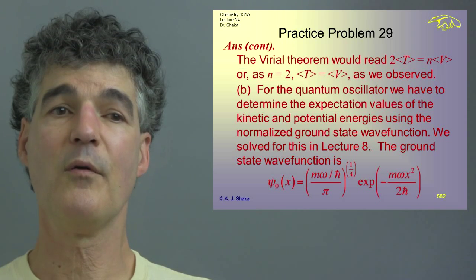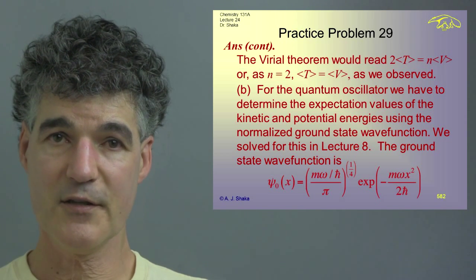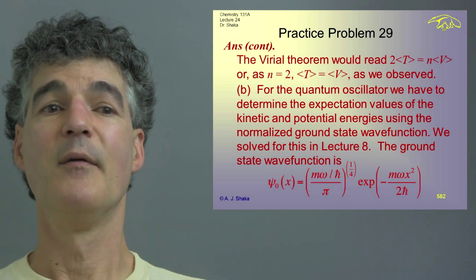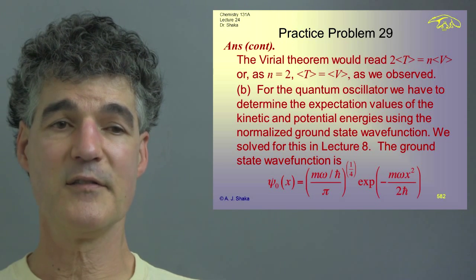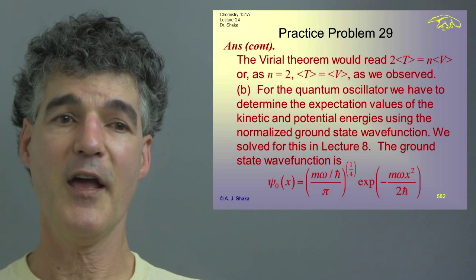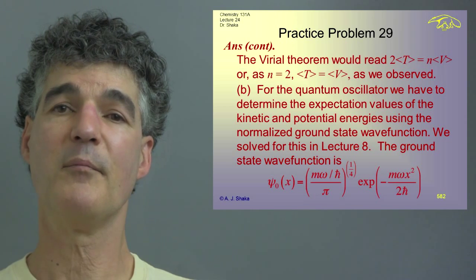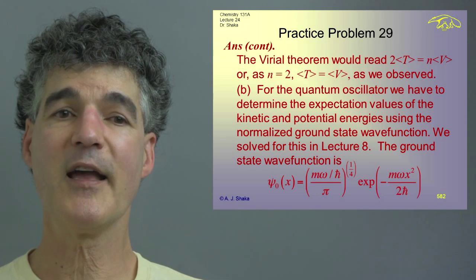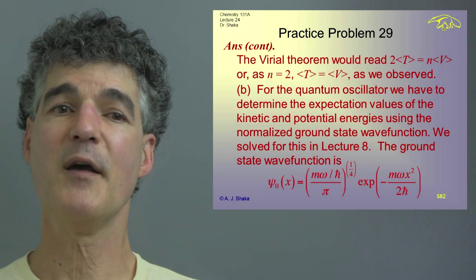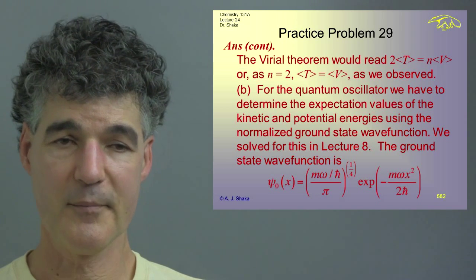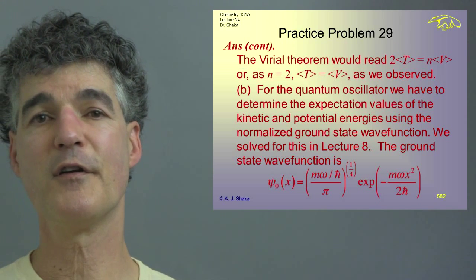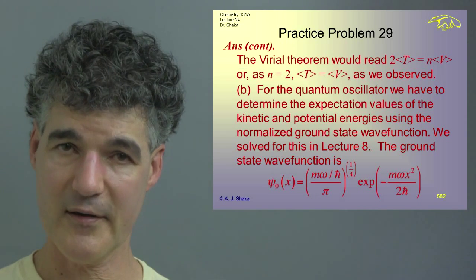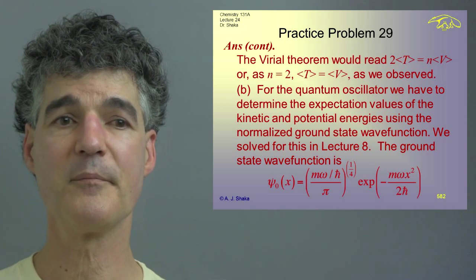For part B, the quantum oscillator: recall from lecture 8 we solved this. Here's the ground state wave function for the simple harmonic oscillator: psi = (mω/ℏπ)^(1/4) · exp(−mωx²/2ℏ) — a Gaussian function — written in terms of m and ω to be more comparable to the classical oscillator.